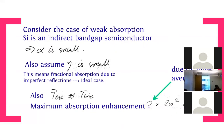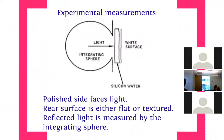This 4n² enhancement is a very significant number. For silicon, n = 3.5, n² ≈ 10–11, and 4n² is over 40. That's a big increase in absorption from simply doing surface texturing and putting a mirror at the bottom. Let's now see how this was actually verified experimentally.